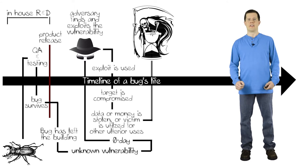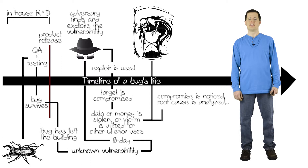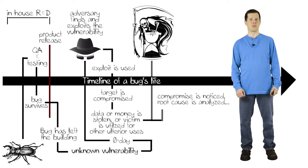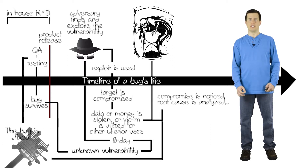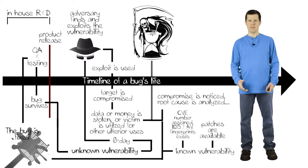At some point later, whoever fell victim to this exploit figures out that something bad has happened. The exact time elapsed between the attack and when it's discovered varies, but on average it's an alarmingly long time. Eventually, computer security experts get involved, do detective work, and trace the attack back to the vulnerability that was exploited. At that point, the bug is no longer called a zero-day — it's now called a known vulnerability and gets added to CVE lists where known vulnerabilities are documented.